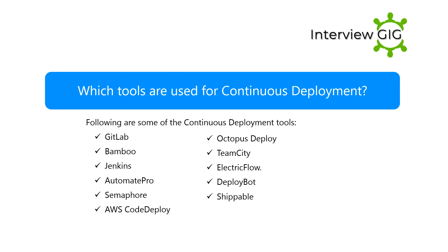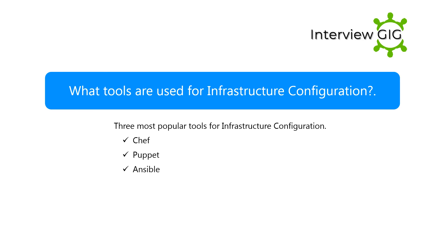Which tools are used for continuous deployment? Following are some of the continuous deployment tools: GitLab, Bamboo, Automate Pro, Semaphore, AWS CodeDeploy, Octopus Deploy, TeamCity, Electric Flow, DeployBot, and Shippable.